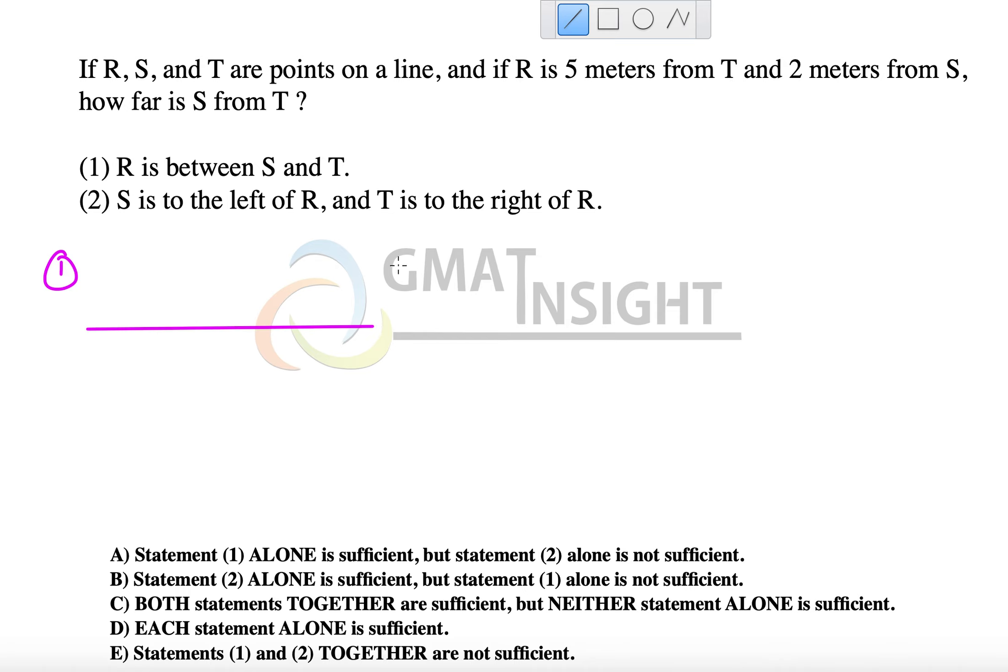R is between S and T. So we have R here and let's assume T here. The distance between R and T is 5, and R is between S and T, which means S must be to the left of R. The distance of S from R is 2, so S should be 2 units to the left. The distance between S and T in this case will be 7 units, and hence the first statement alone is sufficient to answer the question.